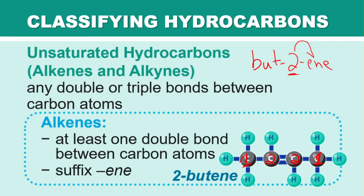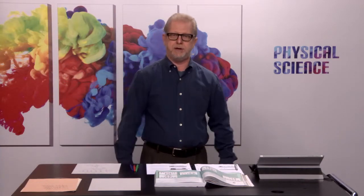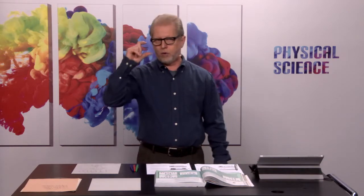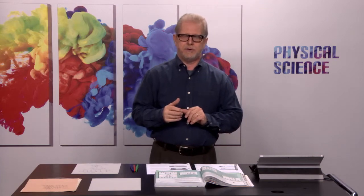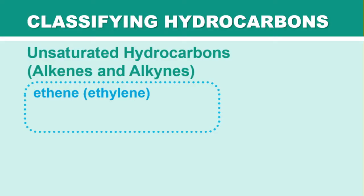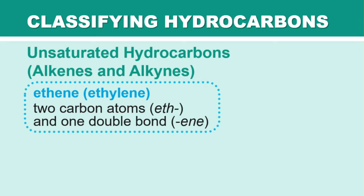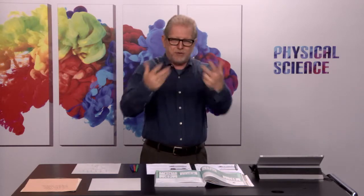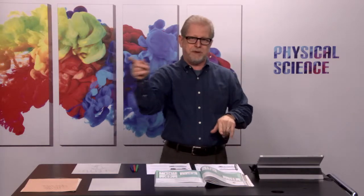You'll also see 2-butene written as 'but-2-ene', with the two placed right next to 'ene', indicating the double bond is on carbon two of four. The first format is the older way; 'but-2-ene' is the newer IUPAC naming. For ethene, there are only two carbons with a double bond between them — you don't need a number when there's only one possible position.